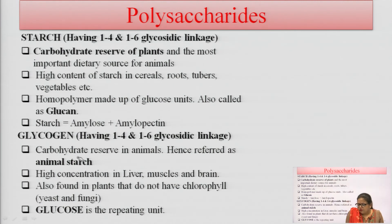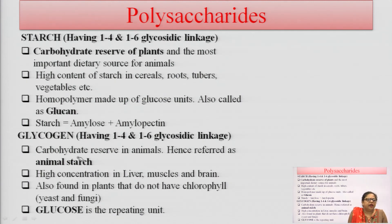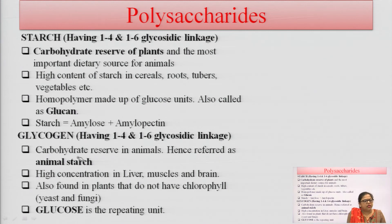Starch has 1,4 and 1,6 glycosidic linkages; it is the carbohydrate reserve of plants and most important dietary source for animals, with high content in cereals, roots, tubers, and vegetables. Starch is made up of two units: amylose and amylopectin. Glycogen has 1,4 and 1,6 glycosidic linkages; it is the carbohydrate reserve in animals (animal starch), with high concentration in liver, muscles, and brain. Glucose is the repeating monomer unit of glycogen.